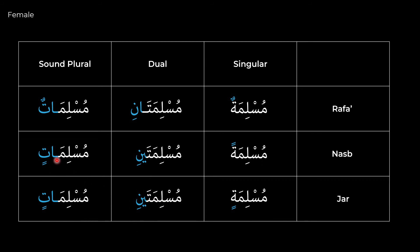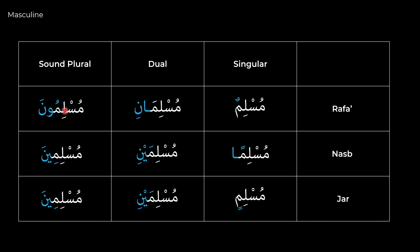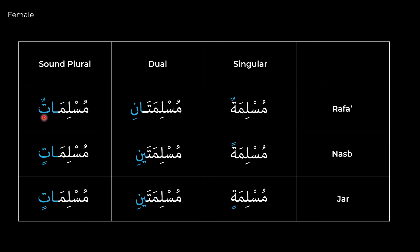For the feminine sound plural in nasab and jar, the ending is atin. So to compare: for the masculine sound plural the endings were una, ina, and ina — while for the feminine sound plural it's simply atun, atin, and atin. Memorizing this chart will be tremendously helpful as it teaches you how to handle male and female isms when you encounter them and know exactly where they lie on the chart.